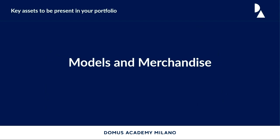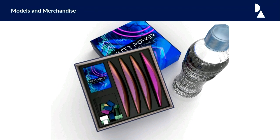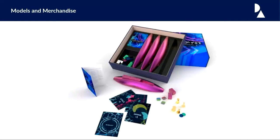Whenever you have done a final model or a final merchandising output, you have to show it — even if you don't think you have a very professional final image. Try to work a little bit on Photoshop if you're able, but put it in so we can see which was the last phase of your project. Show consistency. If you show a final model, there must be very clear images — don't put too many things in one page. One image, very clear.